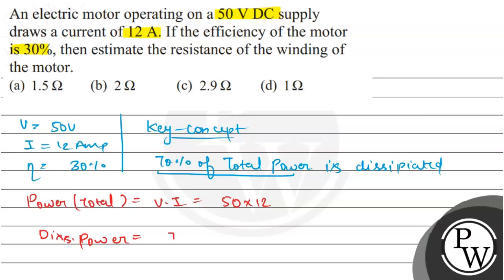So dissipated power is equal to 70 by 100, this is 70% of total power which is 50 into 12. So this is 2 times and this is 6 times, this is 70 into 6 which is 420 watt.